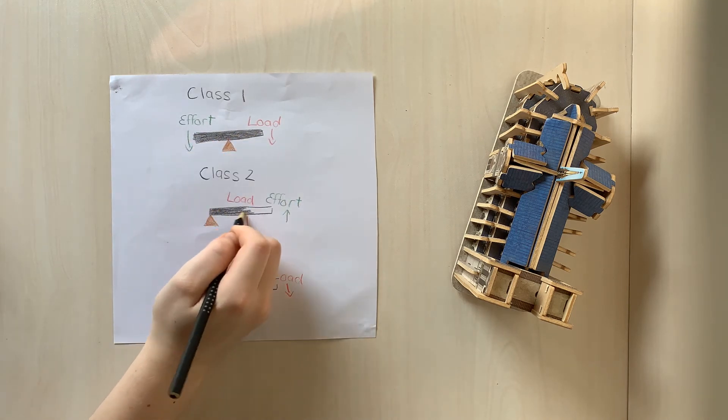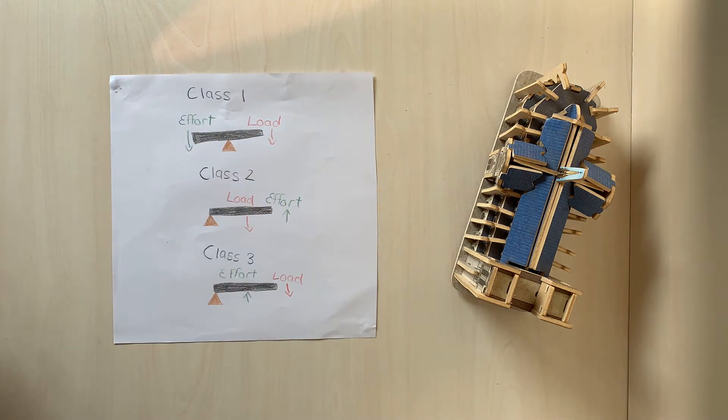This means that the third class lever isn't very efficient. These are things like a fishing rod, a golf club, etc.